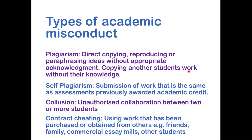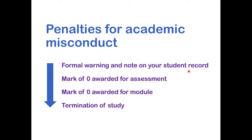The final type of misconduct is contract cheating — using work that's been purchased or obtained from others, such as friends or family, commercial essay mills, or other students. If someone else wrote the work for you, that counts as academic misconduct. The university does impose penalties, which can range from a formal warning and a note on your student record, to a mark of zero for an assessment or a module, and in serious or repeated cases, you could be asked to terminate your study and be unable to complete your degree.